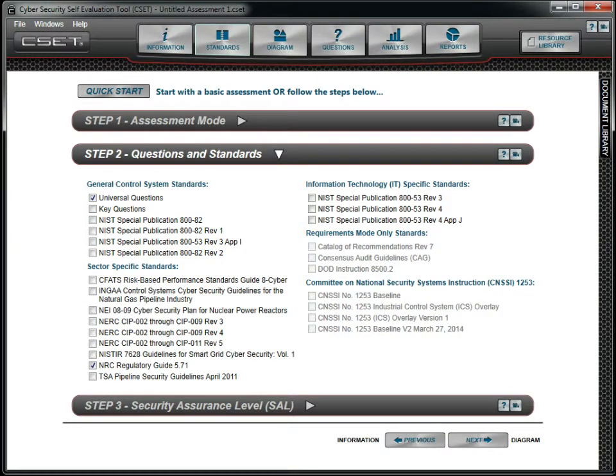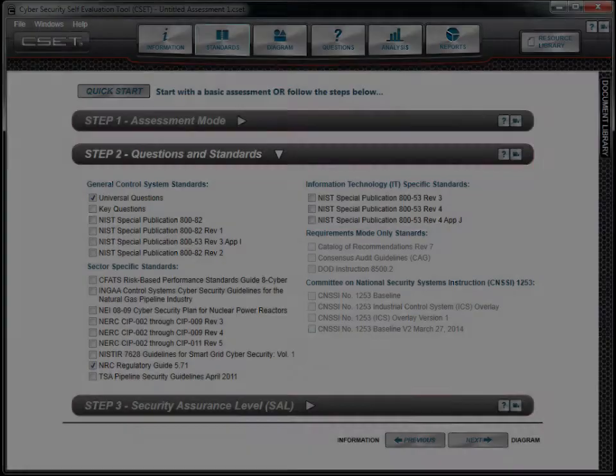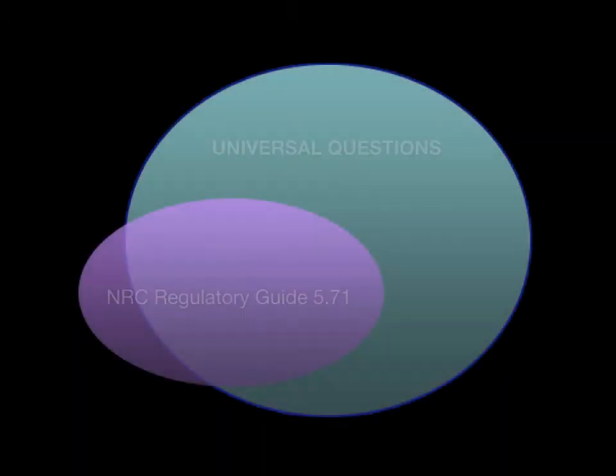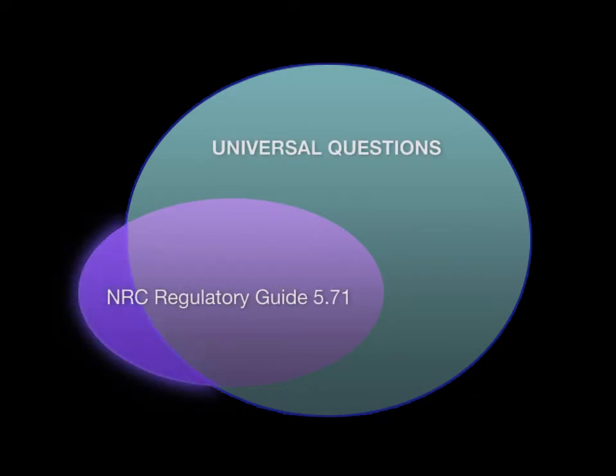If a standard has questions beyond what are located in the universal set, then the questions presented will include all common questions and all additional questions from the standard not found in the universal set, as seen in this example.